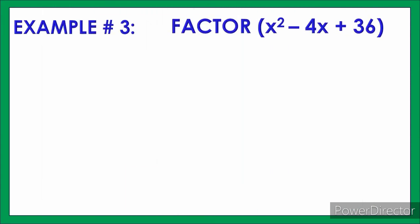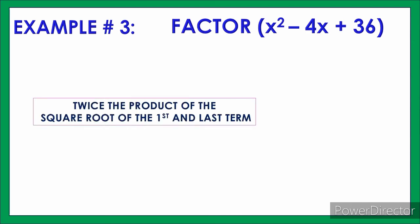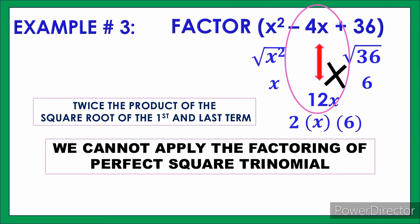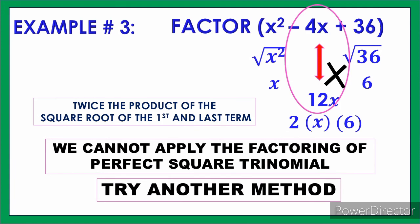Example number 3: factor x² minus 4x plus 36. Checking whether it is a perfect square trinomial — x² is a perfect square and 36 is also a perfect square. However, checking the middle term: square root of x² is x, square root of 36 is 6, and 2 times x times 6 equals 12x. The middle term is negative 4x, which does not match 12x, so this is not a perfect square trinomial and we cannot apply this factoring method.